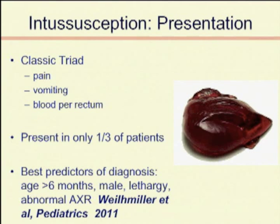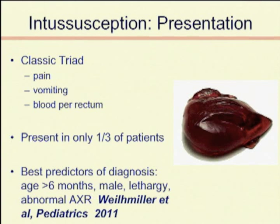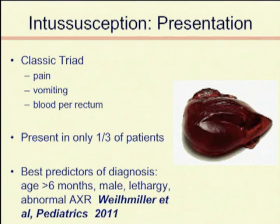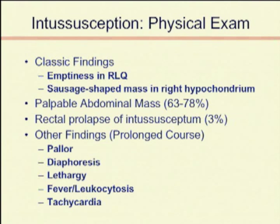A study in pediatrics looked at 60,000 consecutive admissions to the emergency department at Boston Children's Hospital in children with abdominal pain, and found that the most reliable indicators of intussusception were considerably more subtle: children greater than six months, male children with lethargy, and an abnormal x-ray. On exam, the findings can be all over the place. Certainly if you feel a palpable mass on the right side or right upper quadrant, that's very indicative. Physical exam will generally be much more subtle.